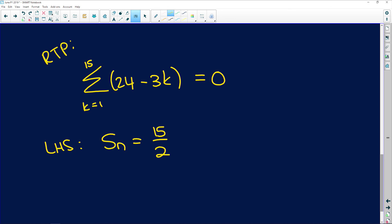Here we're going to say the left hand side, it's equal to 15 over 2 into the first term. So the first term is going to be 24 minus 3k, and k is 1, so 24 minus 3 is 21, plus the last term. And if we substitute 15 in here, we're going to get 24 minus 3 times 15.